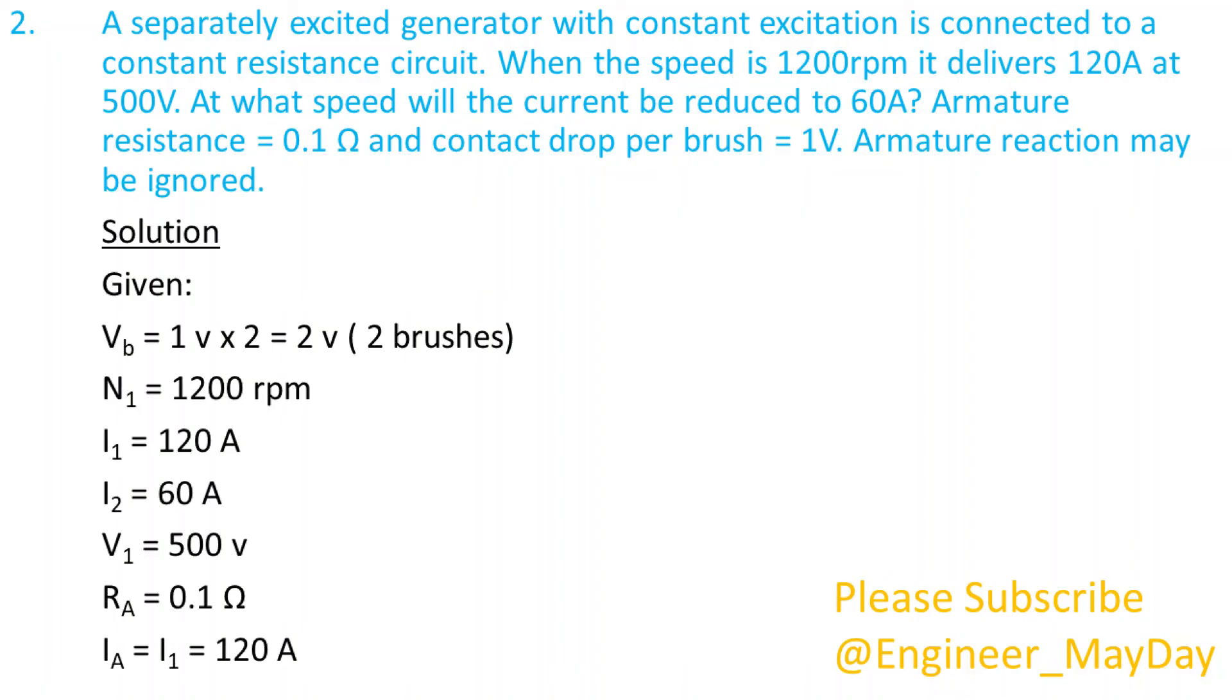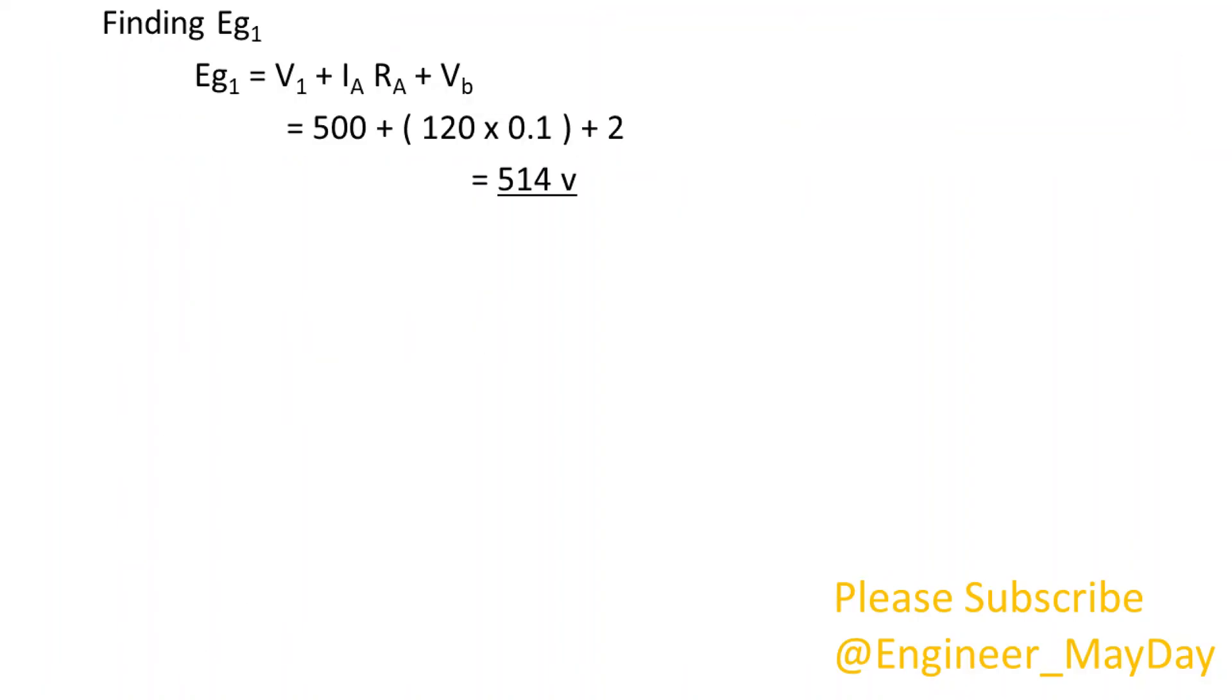IA equals I1 equals 120 amperes. Finding EG1, which equals 514 volts. Finding the load resistance R, which equals 4.167 ohms.